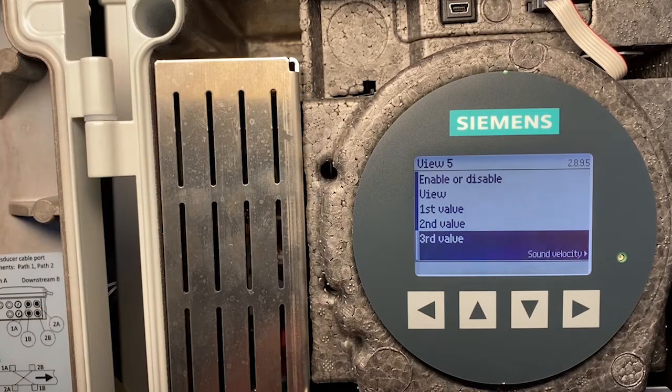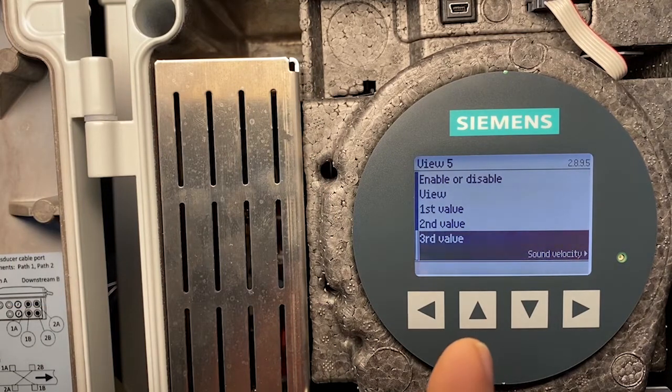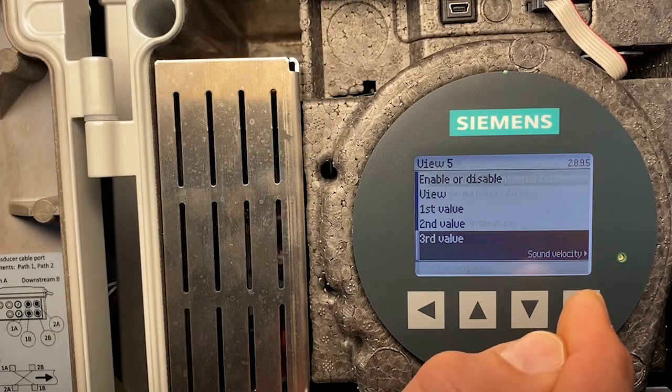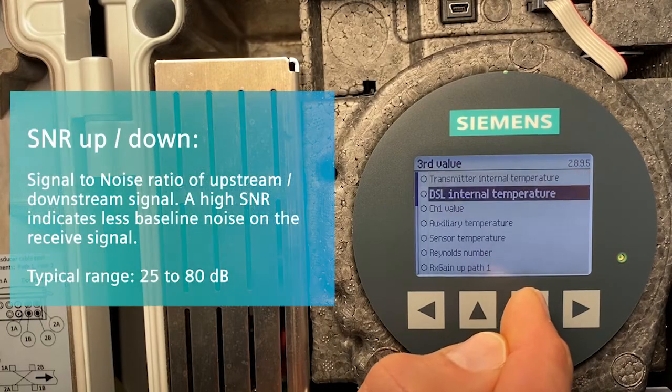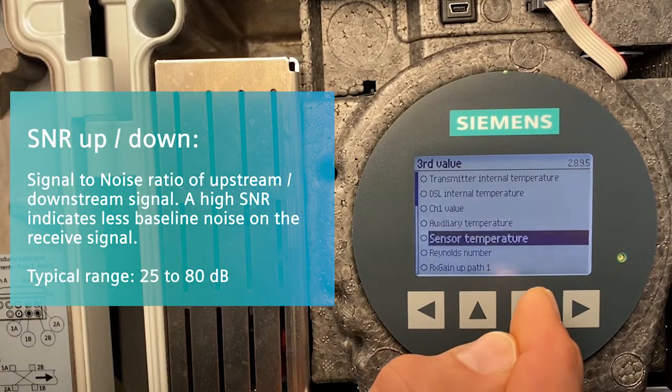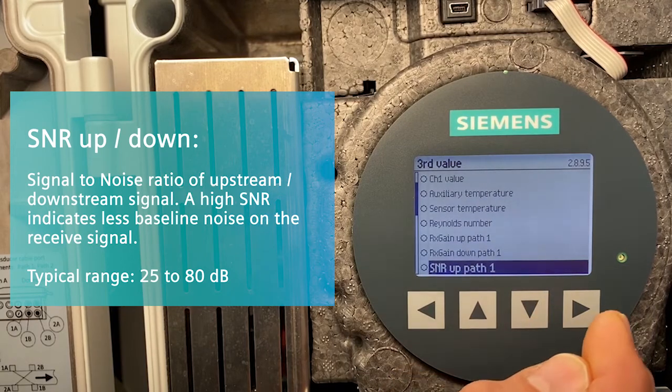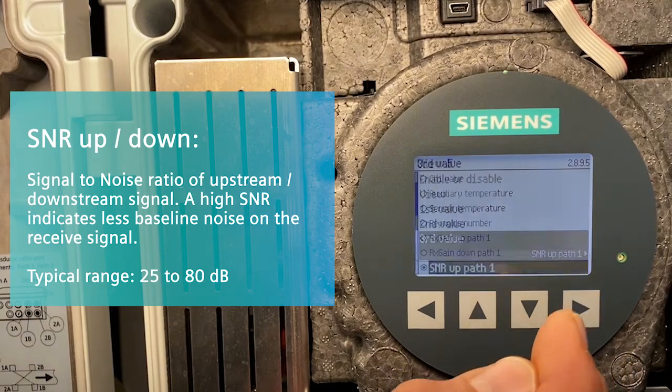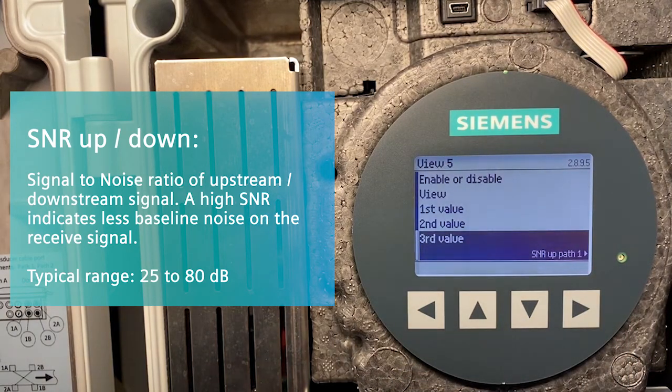Third value. Here I want to have the signal-to-noise ratio up path 1. SNR up stands for signal-to-noise ratio of the upstream signal. A high signal-to-noise ratio indicates less baseline noise on the received signal. Typical range 25 to 80 dB.